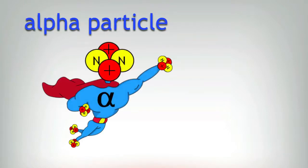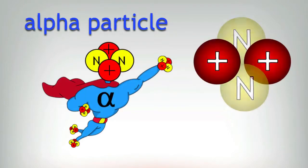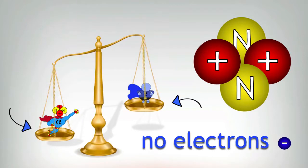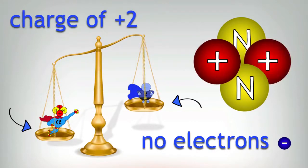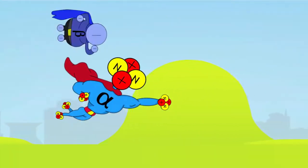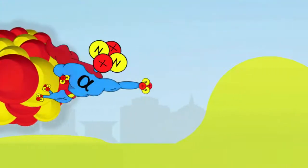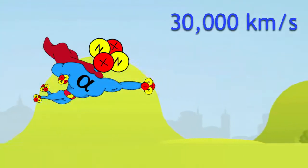So there you have it. An alpha particle is two protons and two neutrons. It's the heaviest type of radiation, and the two protons give it a charge of plus two. Also, because it's very heavy, it travels slower than other particles. Well, in particle terms anyway. They come out of the nucleus at 30,000 kilometers per second. You might find that a bit fast, but wait till you see the other particles.